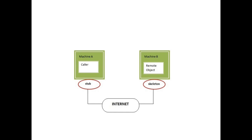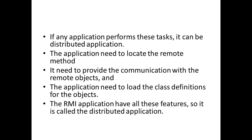This is the architecture of RMI. Machine A is the caller and Machine B holds the remote object — Machine A is the client and Machine B is the server. For the client side we have the stub object and for the server side we have the skeleton. Through this stub and skeleton we connect over the internet to get the answer.